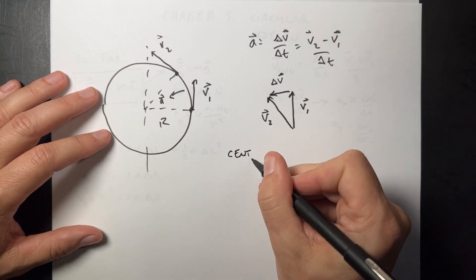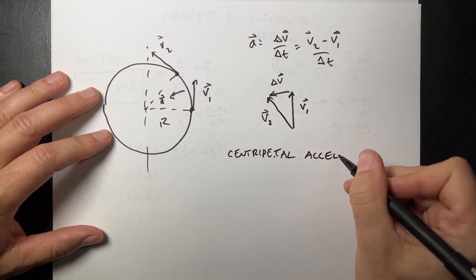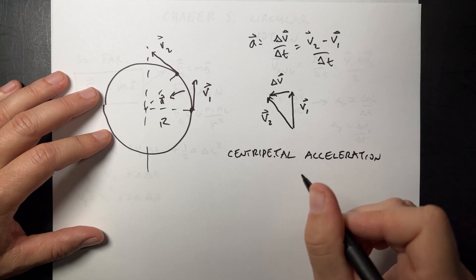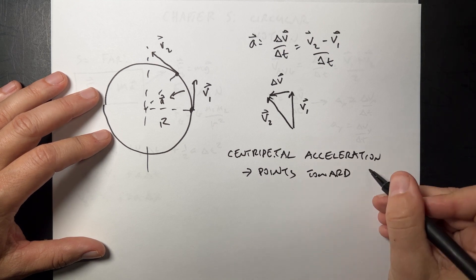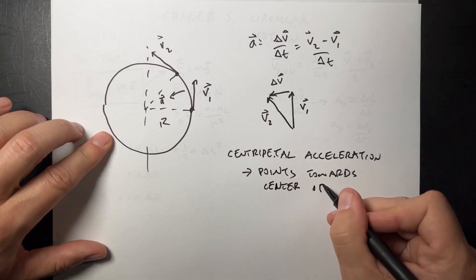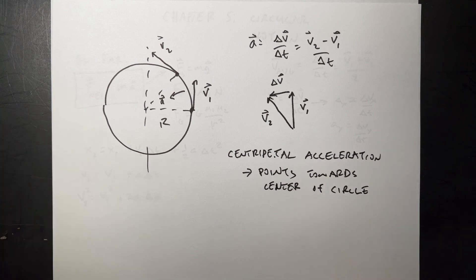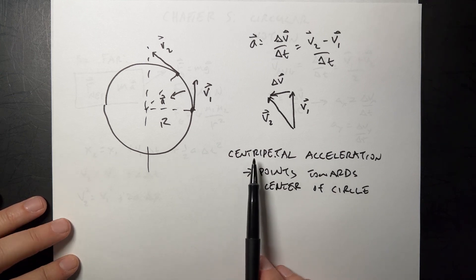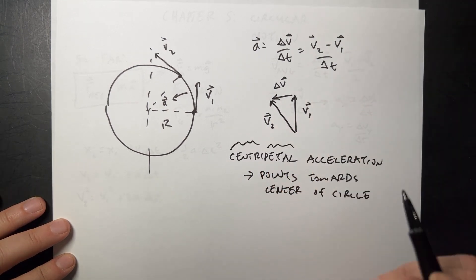We call this centripetal acceleration. Number one: it points towards the center of the circle. That's actually what centripetal means — center pointing.